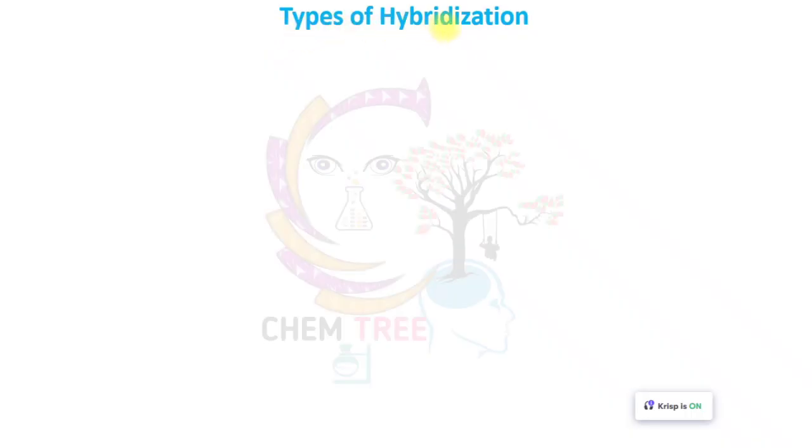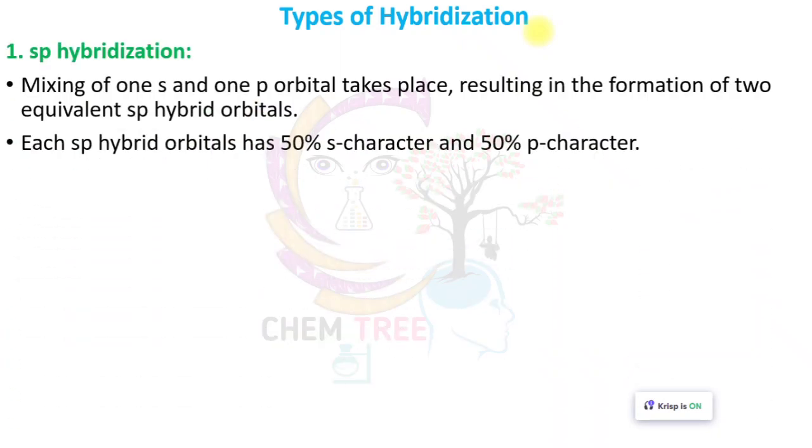Types of hybridization. First one: SP hybridization.